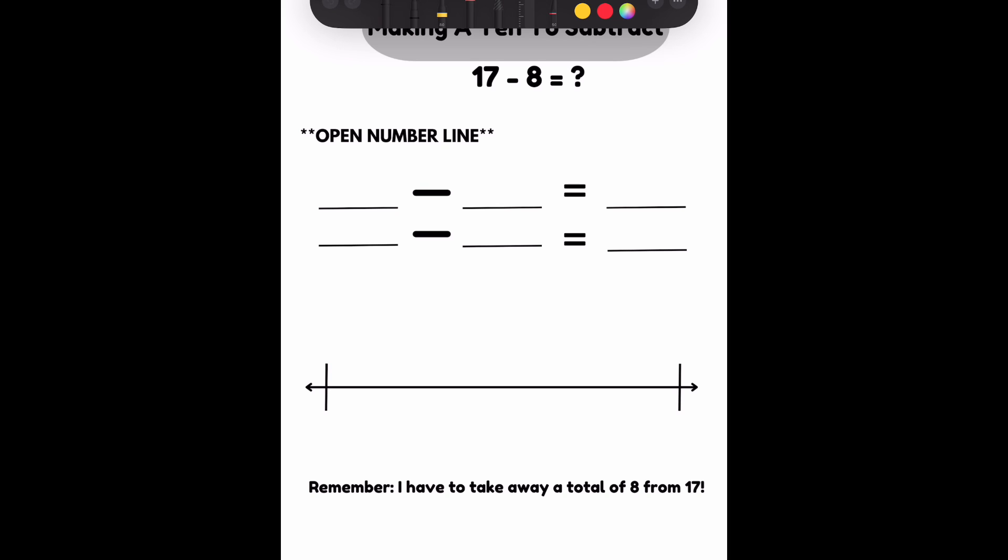Looking at an open number line. Again, when I subtract, I've got to work my way backwards. I'm starting with 17. I need to make a 10. 17, and I need to get to 10. If I subtract, I can say 17 minus 7 makes 10.